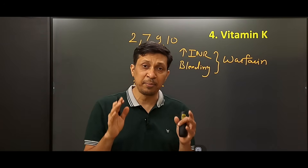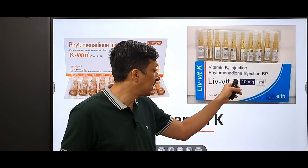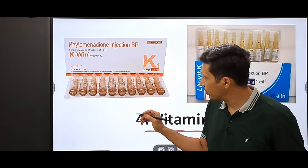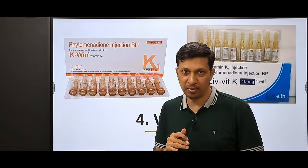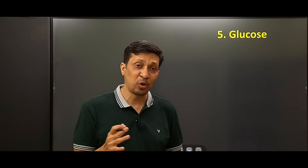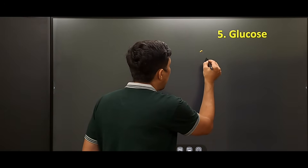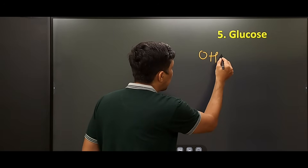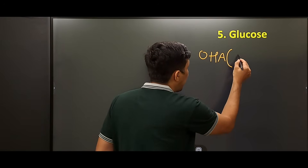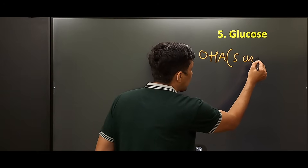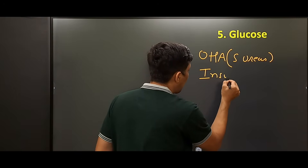Vitamin K is available as a 1 ml ampoule containing 10 mg, or as a 0.5 ml ampoule containing 1 mg. Lastly, an often overlooked drug is glucose, used when there is hypoglycemia in a patient on oral hypoglycemic agents — especially long-acting ones like sulfonylureas — or due to increased insulin dosing.